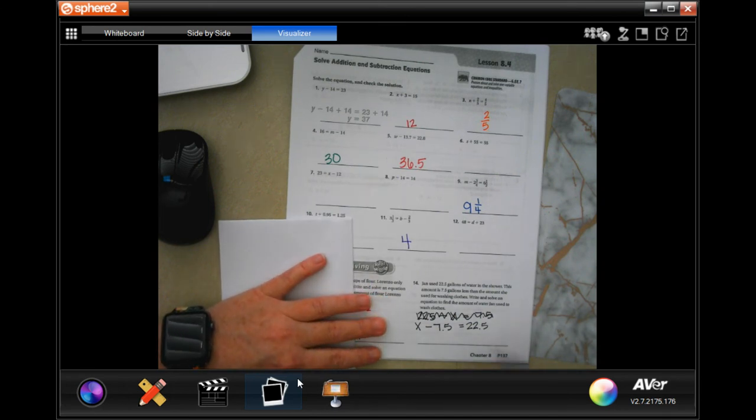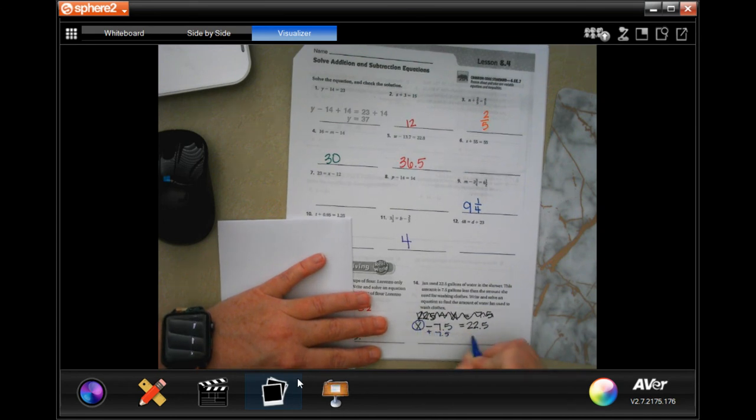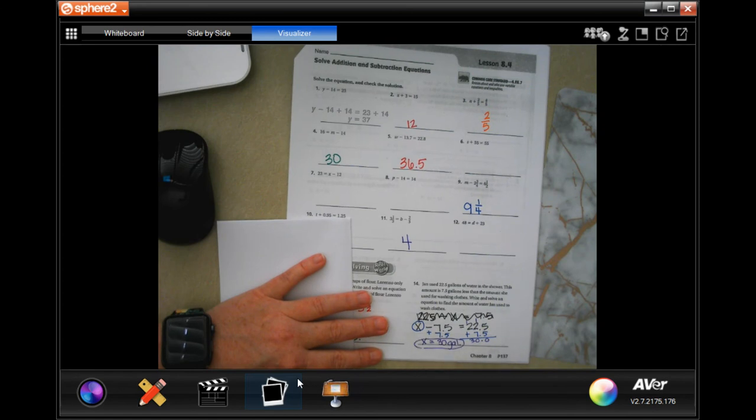We have the amount of gallons she used subtracting the 7.5 gallons equals the 22.5. Sorry, this way it gets turned around sometimes, too. Now, in order to find out what X is, add 7.5, add 7.5. Notice how I lined up those decimals. X equals, drop that decimal, carry the 1, carry the 1 again, 30 gallons.